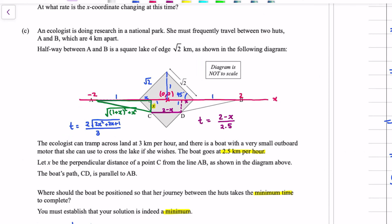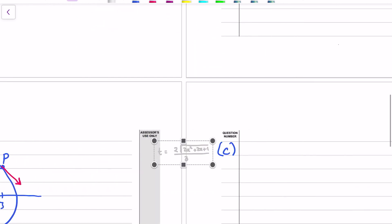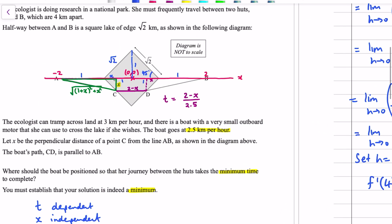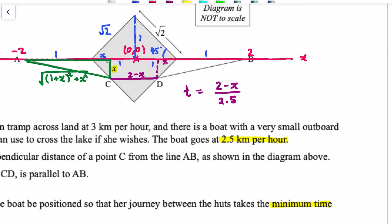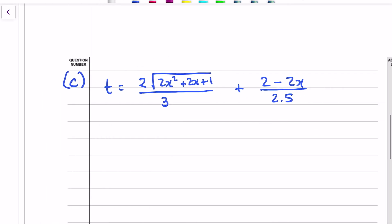So time is that plus 2 minus 2X all over 2.5. So that's my total time and I just need to differentiate this function and then set it equal to 0 to find the minimum time.